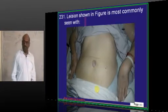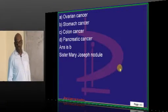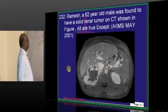The lesion is typically periumbilical lesion, which is Sister Mary Joseph nodule, which is typically seen in case of stomach cancer.